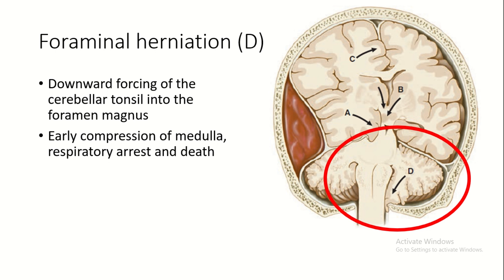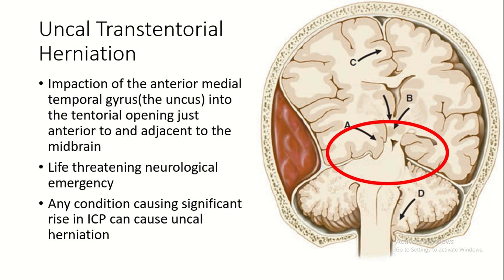In foraminal herniation, there is early compression of the medulla leading to respiratory arrest and death. Now let's talk about uncal transtentorial herniation. In this condition there is impaction of the anterior medial temporal gyrus, the uncus, as indicated by letter A in this picture, into the tentorial opening just anterior to and adjacent to the midbrain.